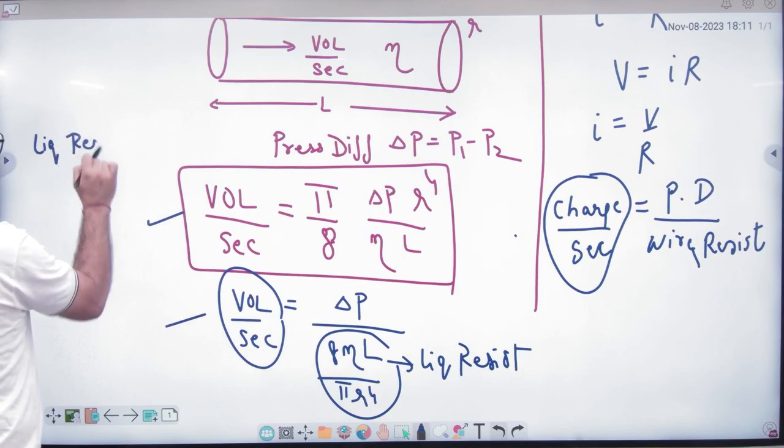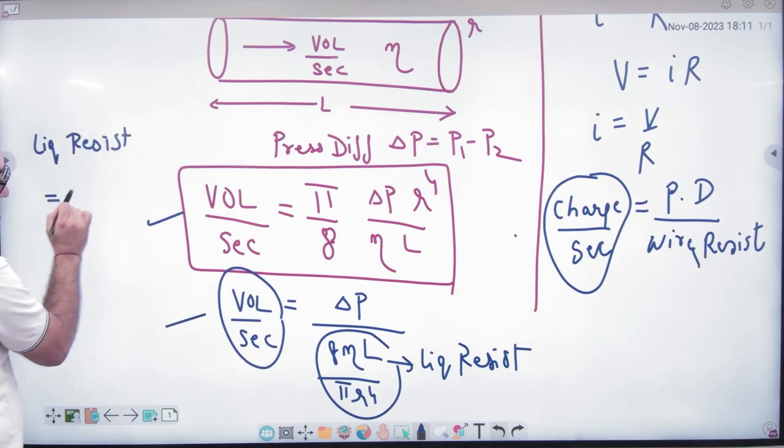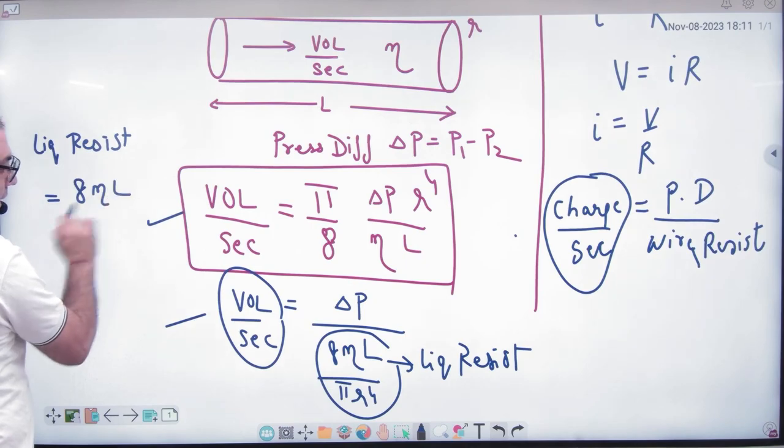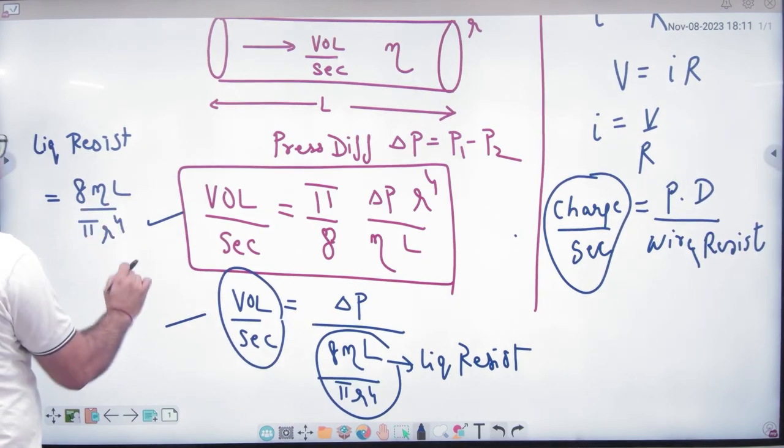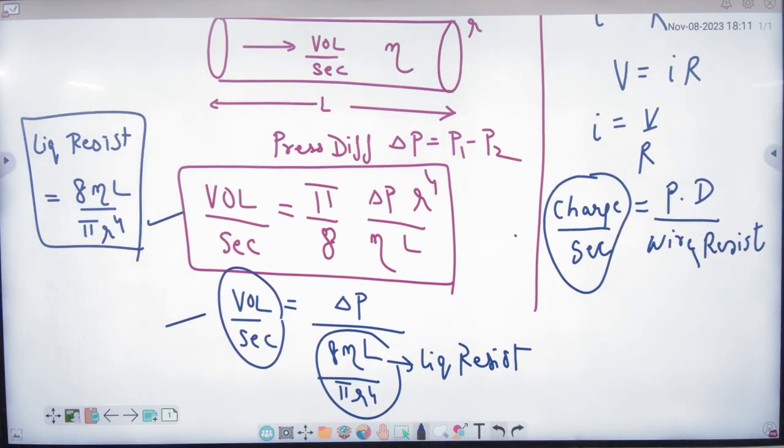Liquid resistance is given by 8 eta L by pi R to the power 4. Note this. If you mark it as liquid resistance, then let's compare it with electricity.